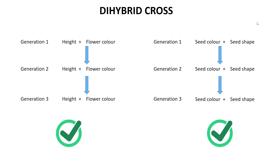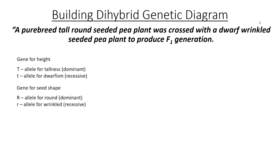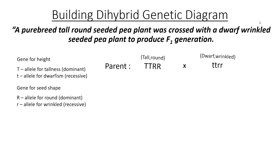Let's say we are crossing a pure breed tall round-seeded pea plant with a dwarf wrinkle-seeded pea plant. Although the homologous chromosomes separate during meiosis, since these two individuals are homozygous for both genes, there is only one type of gamete that can be produced — big T big R for this individual and small t small r for this individual.